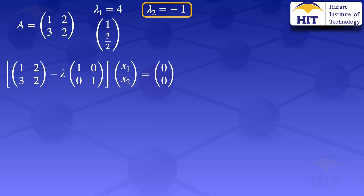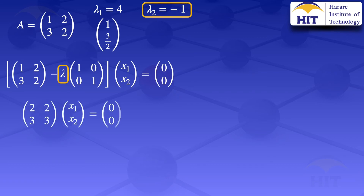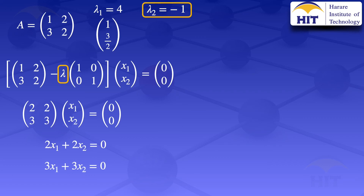We now move on to finding the eigenvector corresponding to lambda 2. Substituting lambda equals minus 1 into the formula gives a minus 1 on the diagonal, resulting in 1 plus 1 and 2 plus 1 on the diagonal elements. The result is the matrix [[2,2],[3,3]] multiplied by the column vector x1, x2 equals the zero-vector 0, 0. By matrix multiplication, this gives 2x1 plus 2x2 equals 0, labeled equation 3, and 3x1 plus 3x2 equals 0, labeled equation 4.